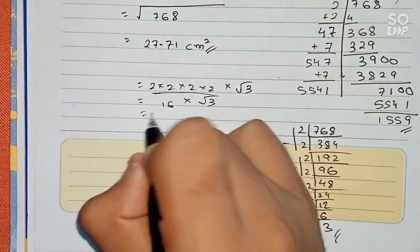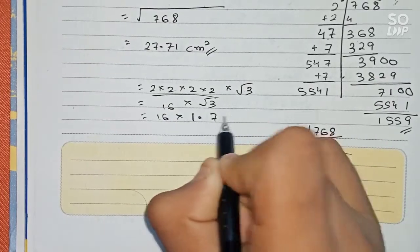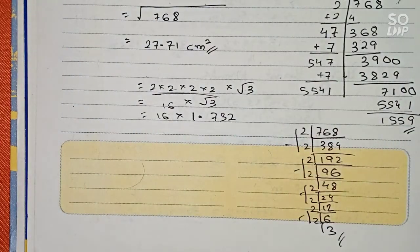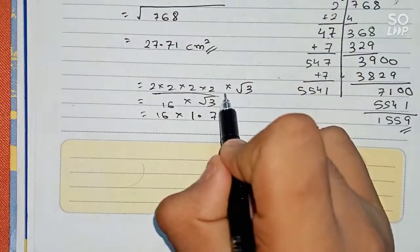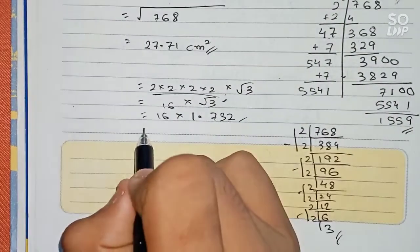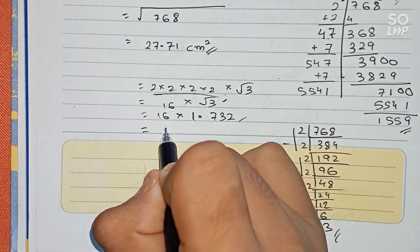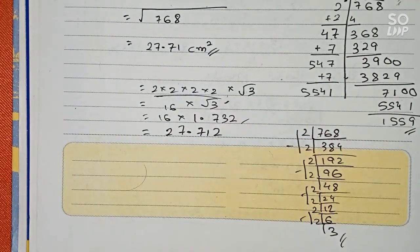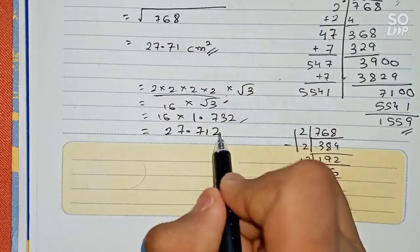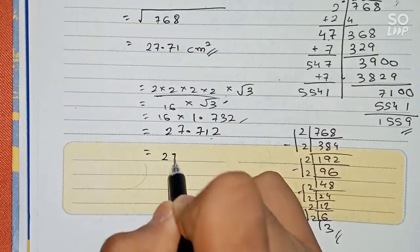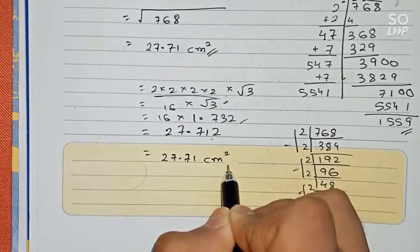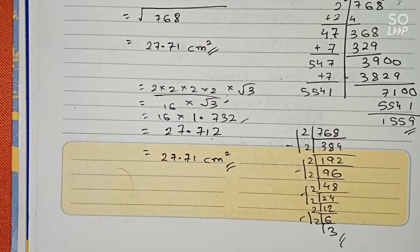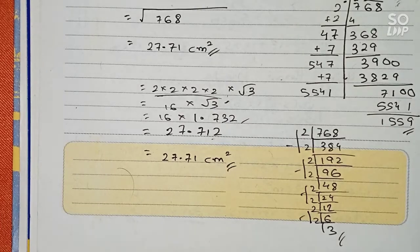Root 3 we take as 1.732 up to 3 decimal places. After multiplying 16 by 1.732, we get 27.712. Since the question asks for 2 decimal places, we round to 27.71 centimeter square. So by both methods the answer is the same: 27.71 is the final answer for this question. Thanks for watching this video — please subscribe to my channel for more solutions like this.